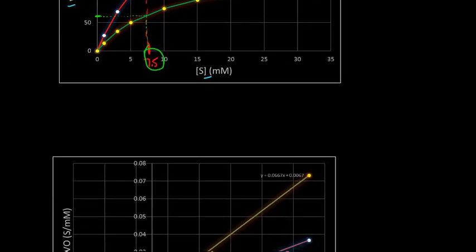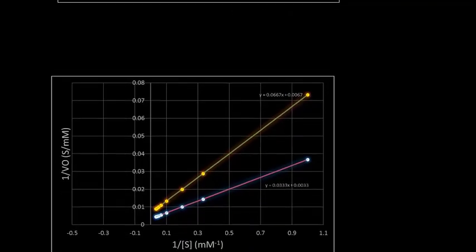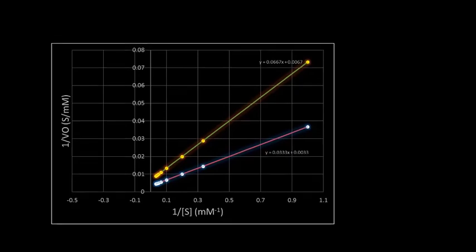If we look at this in terms of our Lineweaver-Burk plot, what we see here is that for the inhibited reaction we definitely have a different slope, so our slope has changed. And recall that slope is equal to Km divided by Vmax.